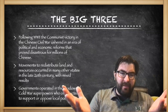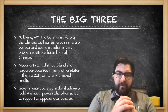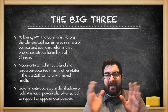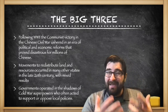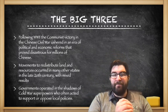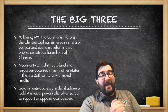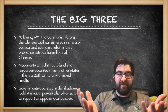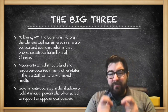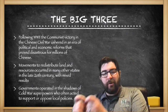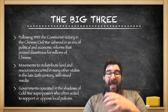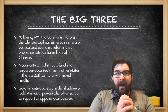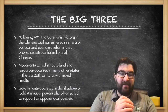Following World War II, the communist victory in the Chinese Civil War ushered in an era of political and economic reforms that proved disastrous for many in China. Movements to redistribute land and resources occurred in many other states in the late 20th century, with some mixed results. Governments were often operating in the shadow of Cold War superpowers, who would act in some cases to support or oppose local policies occurring in these nations.